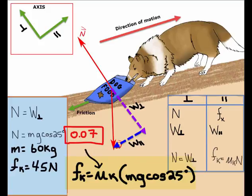you should be getting 0.07 for the coefficient of kinetic friction. Check if this makes sense. 0.07 is a small number and the dog has already set the bag in motion, so this coefficient makes sense.